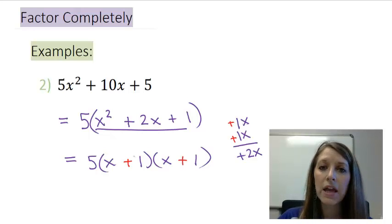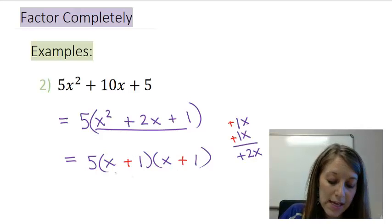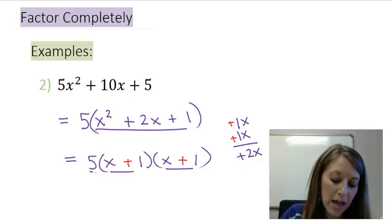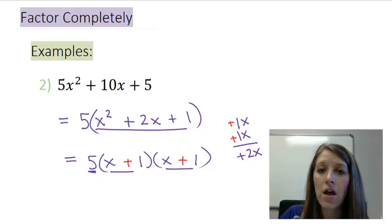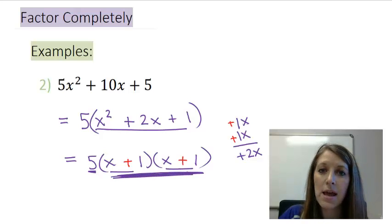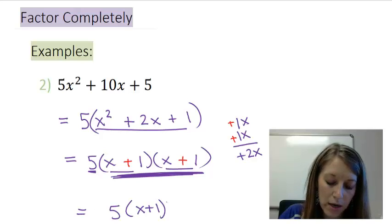Now I cannot factor anything individually farther because if I look inside my parentheses there are two terms and I cannot factor those by using squares or cubes. And my first guy here is only one term so I cannot factor it that way. But if I look at these two sets of parentheses they match exactly. So I can condense those as x plus 1 quantity squared.